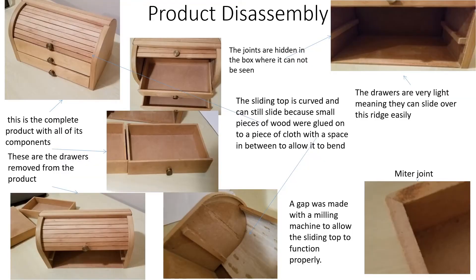In this second example we have a product which we are not able to physically disassemble, but what we can do is open the product, remove the drawers, and decide how each part is made. For example, the joints are hidden in the box, making it difficult to identify what joints are used. The drawers are very light and slide over the ridge easily. The sliding top is curved and can still slide because small pieces of wood were glued onto a piece of cloth with a space in between to allow it to bend.